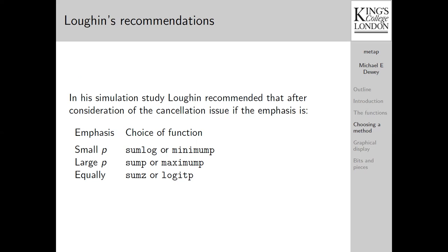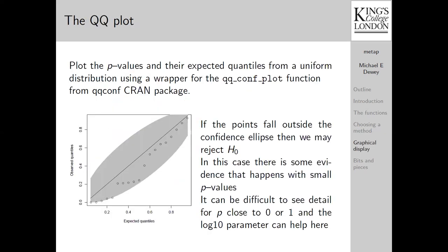Now I mentioned that the package provides some graphics, and this is a QQ plot of the data you've seen used in the example earlier. Using a QQconf CRAN package, I use their function for providing a confidence interval about QQ plots. This is a simultaneous confidence interval. If any of the points falls outside the ellipse, then you can reject the null. In this case, it's actually quite hard to see this maybe, but right down in the bottom left-hand corner, they're very close to the edge of the ellipse. Are they on it? Are they inside? Are they outside? It's quite hard to tell.